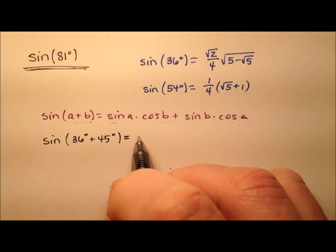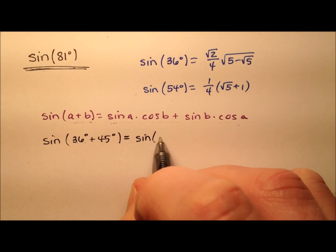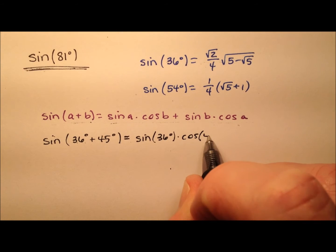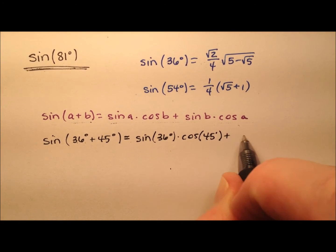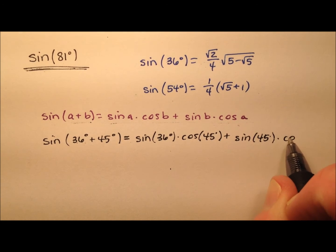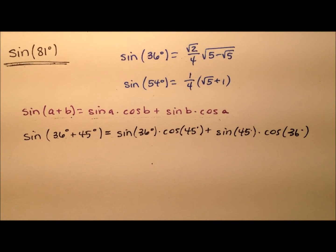So, this expansion here will be the sine of 36 degrees times the cosine of 45 degrees, plus the sine of 45 degrees times the cosine of 36 degrees.